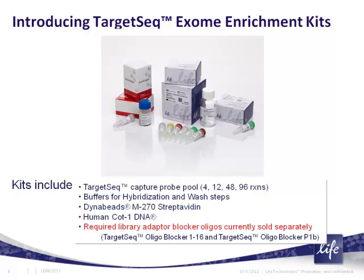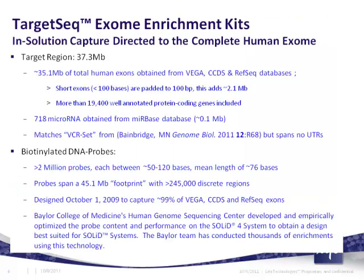Additionally, you need the TargetSeq Oligoblocker 1 to 16 and TargetSeq Oligoblocker P1, which are currently sold separately from the kits but readily available on the same Invitrogen product pages. When considering exome sequencing, since there are a variety of kits on the market, it's important to really understand the content of the kit you're evaluating. I want to go into depth about what is contained in the TargetSeq probe set.